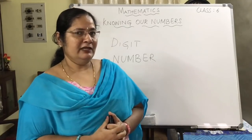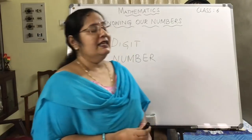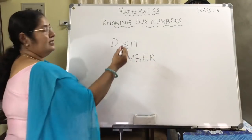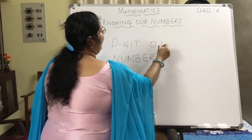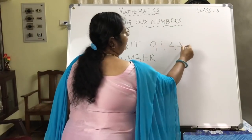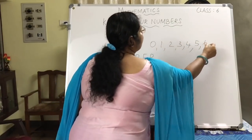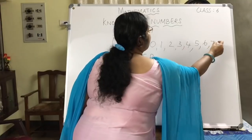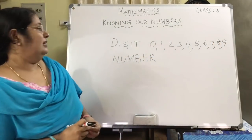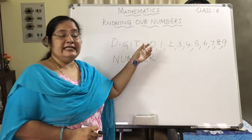Have you got the answer in your mind? Ok, I will tell you. When you use 0, 1, 2, 3, 4, 5, 6, 7, 8 and 9 — these are known as digits.